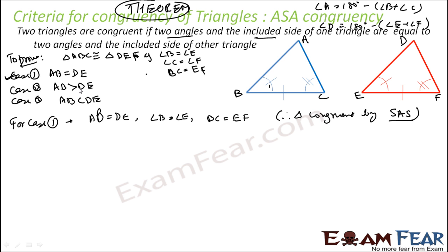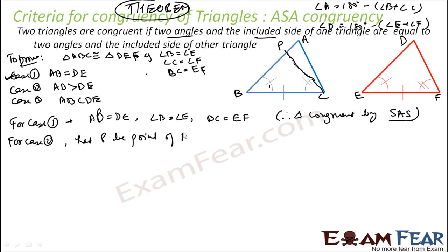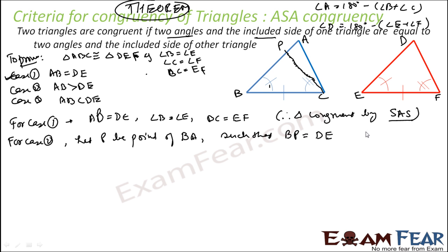Now for case 2: if AB is greater than DE, there can be a point P on AB such that BP is equal to DE. So we take a point P on AB such that BP equals DE. In this triangle BPC, this side BP equals DE, angle B is given equal, and BC is already equal to EF. So let's work with triangle BPC.